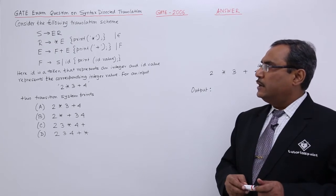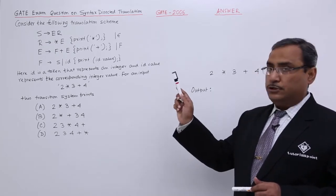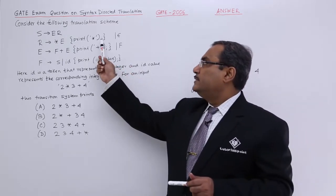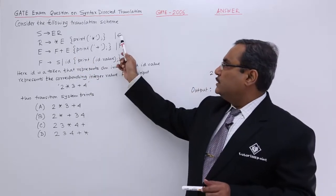S produces ER, R produces star E. For this particular production rule, R produces star E, we are having one semantic action that is print star. R produces epsilon.